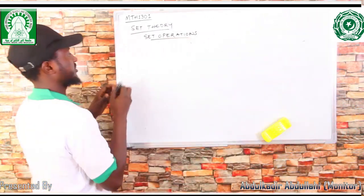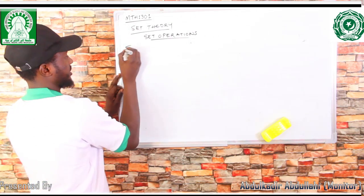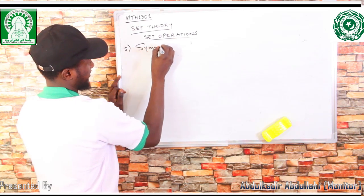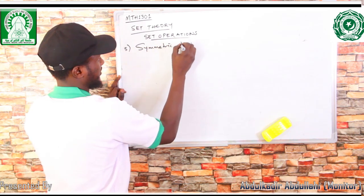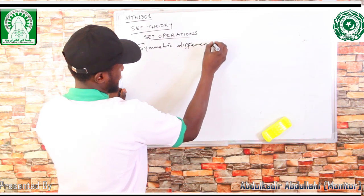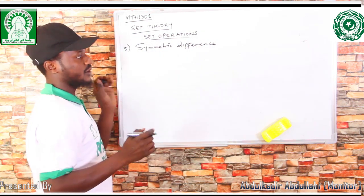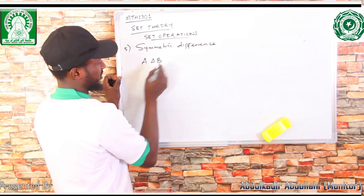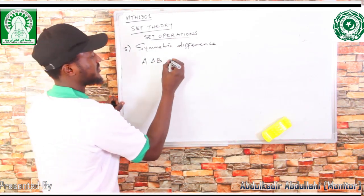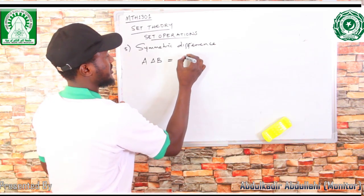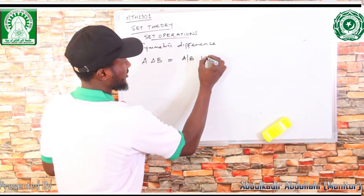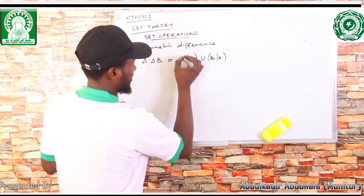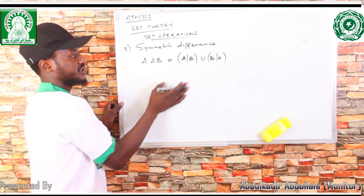The fifth set operation is symmetric difference. The symmetric difference of two sets A and B is denoted A △ B, which is defined as the union of A difference B and B difference A. This is the definition of symmetric difference.